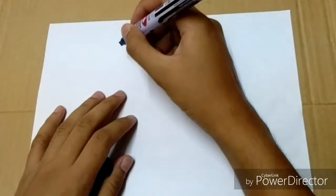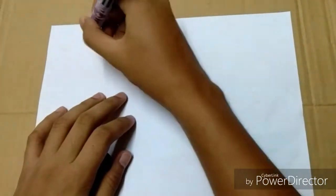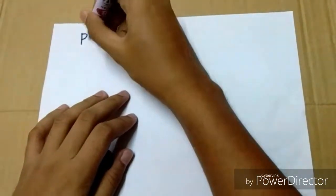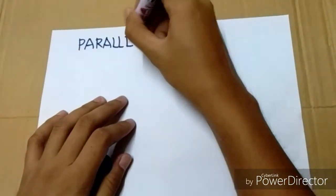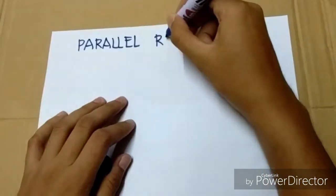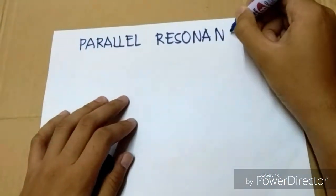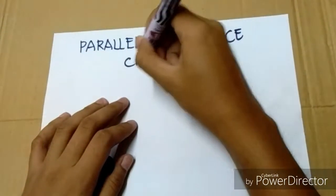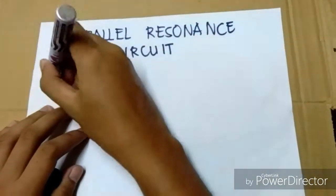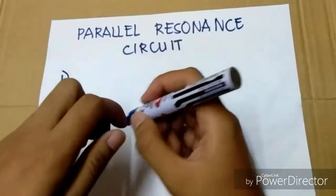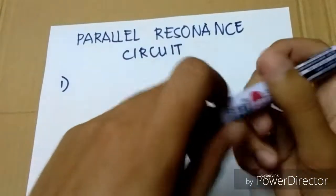These are the characteristics of a parallel resonance circuit. First is: the current in the circuit is in phase with the voltage applied.